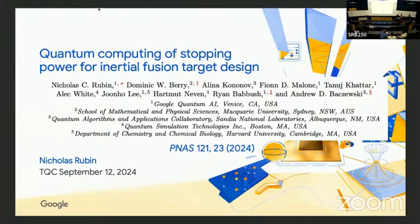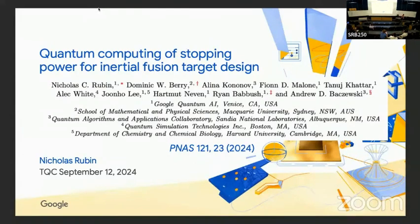Our next speaker is Nikolas Rubin. Hello everyone, glad to be here. This is going to be a little bit of a break from TCS, or Theoretical Computer Science. My name is Nikolas Rubin. I work at Google Quantum AI on the algorithms team, usually focusing on compilation and design of physical simulation algorithms. I entered quantum information about eight years ago, and before that I was a computational condensed matter physicist working on chemistry things. This talk today is actually going to be at the interface of these two topics.